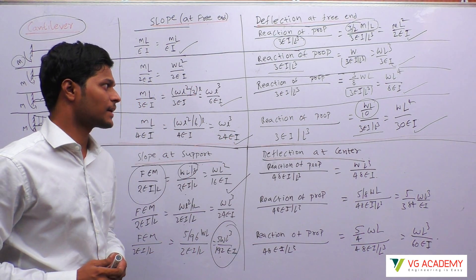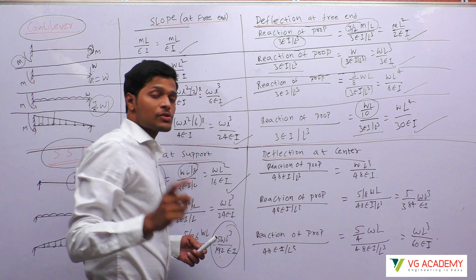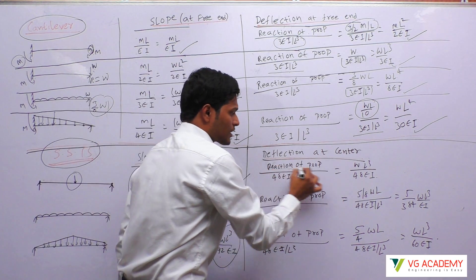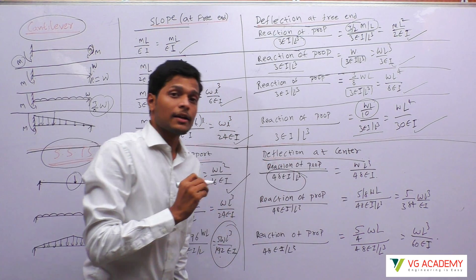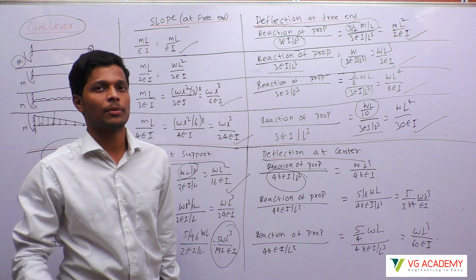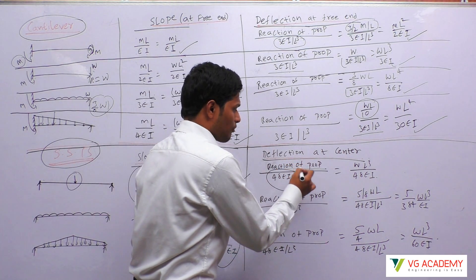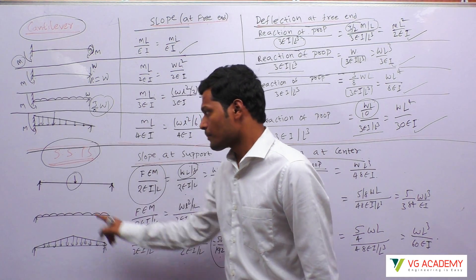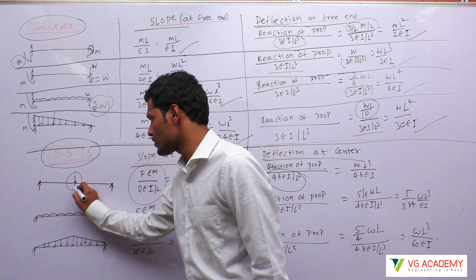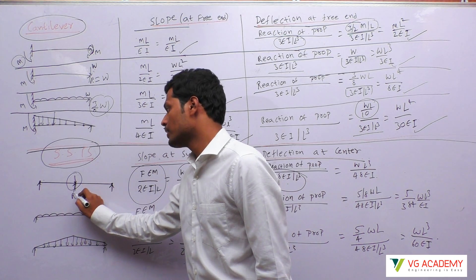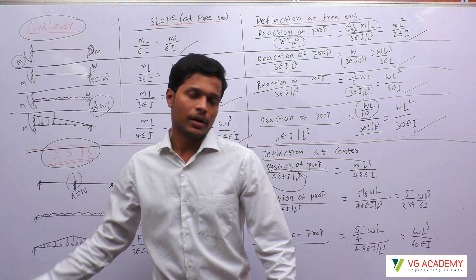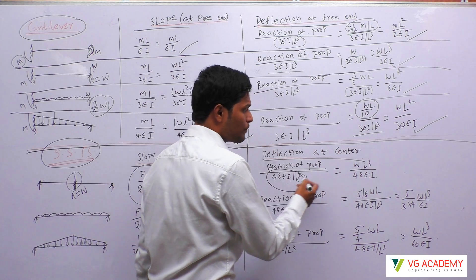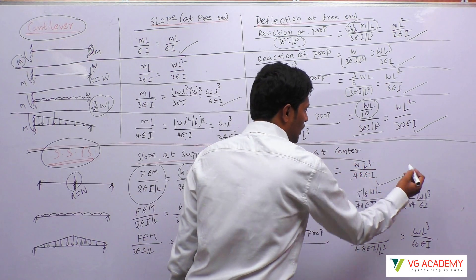To find the deflection at the center of a simply supported beam, assume a prop at the center and find its reaction, then divide by 48EI by L cubed. For a center point load, the entire load goes into the prop, so the reaction is W. Therefore, W divided by 48EI by L cubed gives WL cubed by 48EI.